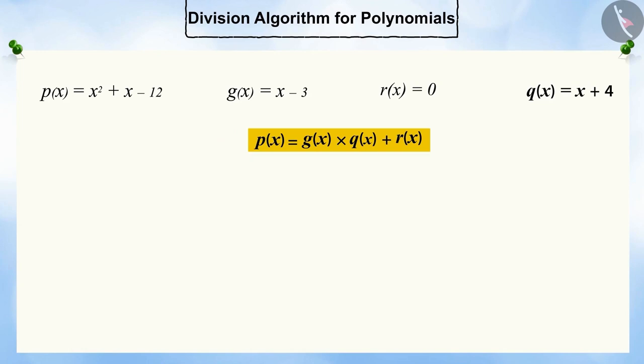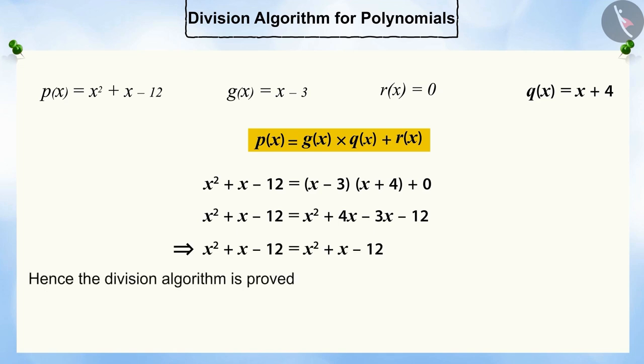Let's examine this conclusion with the help of our polynomials. By replacing all the polynomials in this division algorithm, both the sides become equal, which authenticates the validity of the division algorithm.